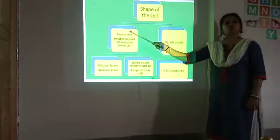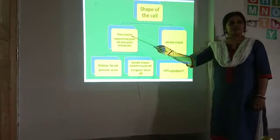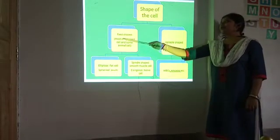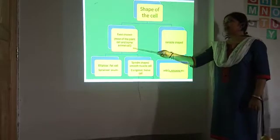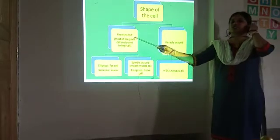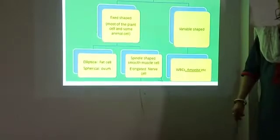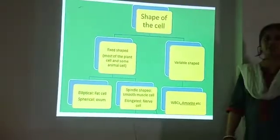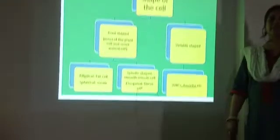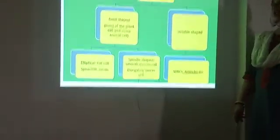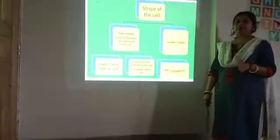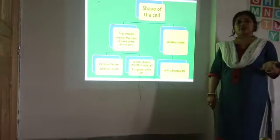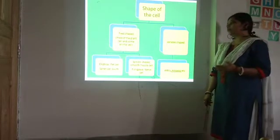What is fixed shape of the cell? Fixed shape cells include most plant cells and some animal cells. For example, in the case of plant cells, the parenchyma cells and the sclerenchymatous cells all have fixed shapes — all parenchyma cells are of the same type and all sclerenchymatous tissue cells are of the same type.